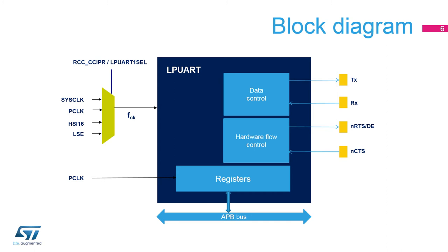TX and RX are used for data transmission and reception. NCTS and NRTS are used for RS-232 hardware flow control. The driver-enable, or DE signal, which is available on the same I/O as NRTS, is used in RS-485 mode.